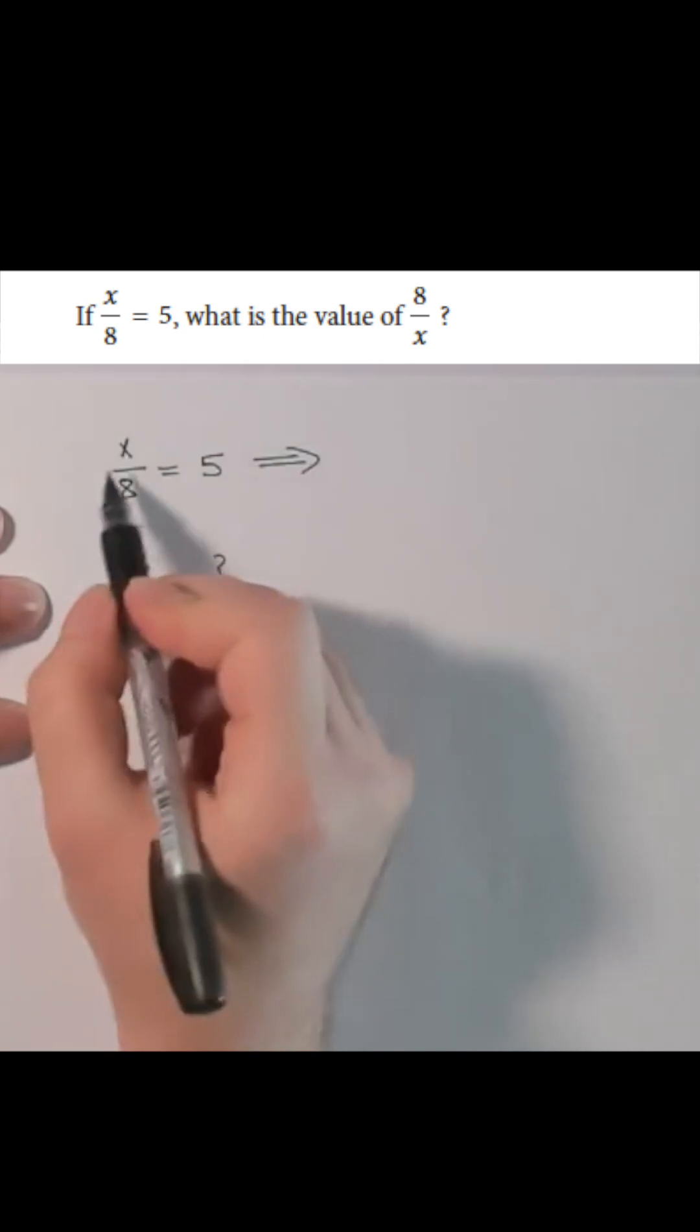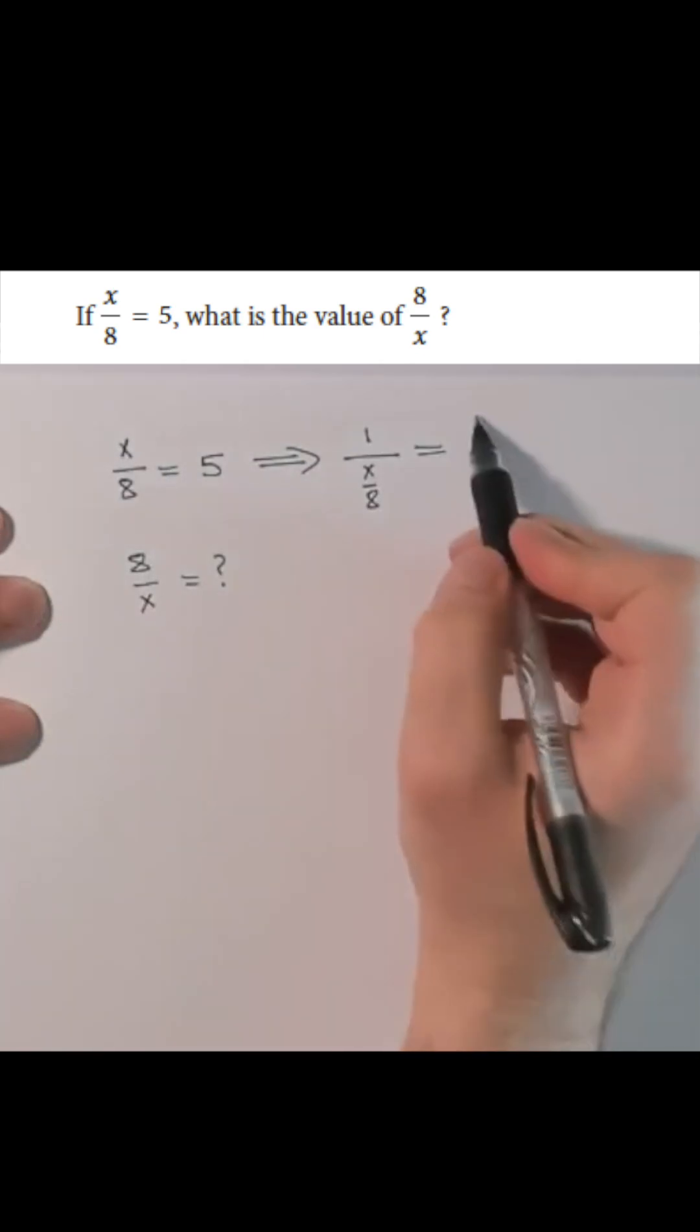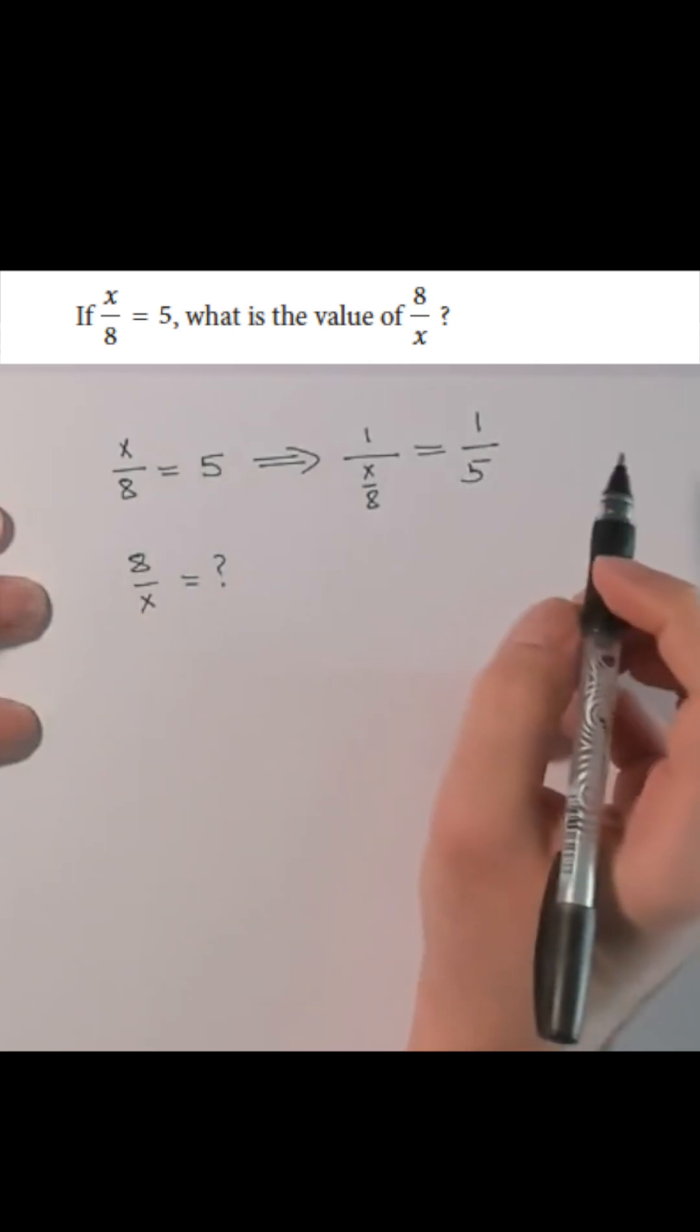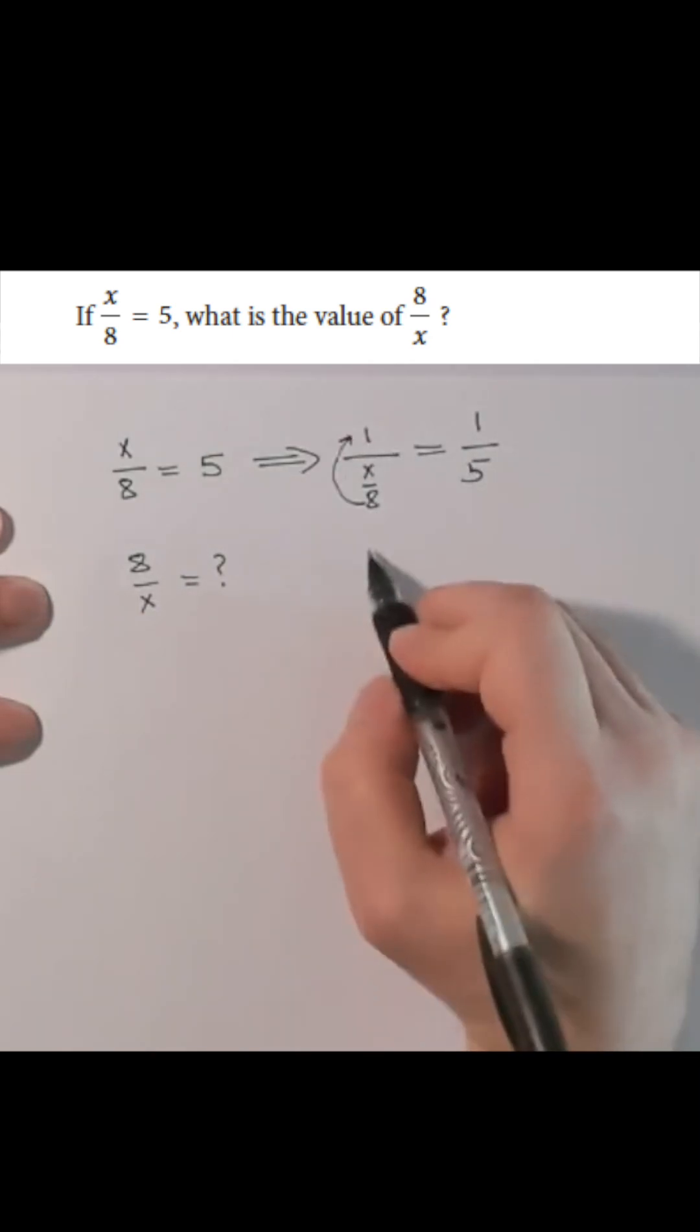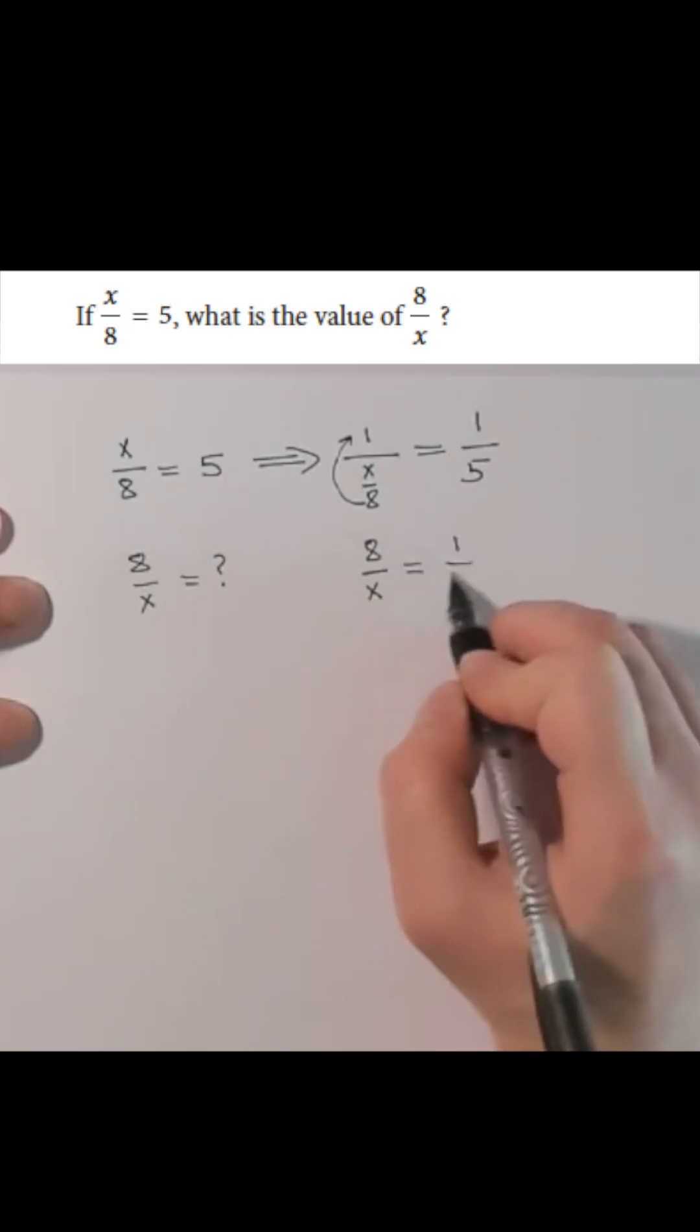So it will be as follows. Divide 1 by all this x over 8. Take the reciprocal of the other side which is 1 over 5. 8 will go up now and therefore becomes 8 over x which is equal to 1 over 5.